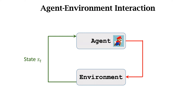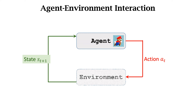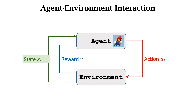Knowing the agent's action at, the environment updates the state to st+1 and provides the agent with the reward rt. If Mario collects a coin, it will receive a positive reward. If Mario wins the game, the reward will be a big positive number. If Mario touches an enemy, then game over, and the reward is a big negative number.